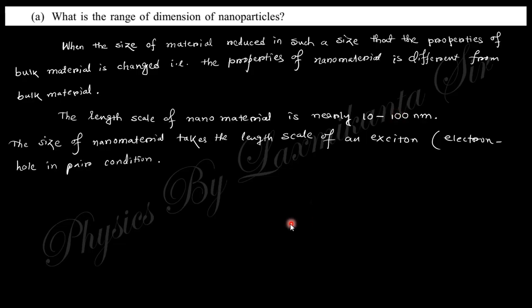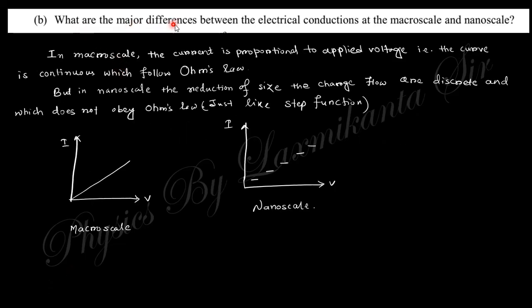Next question says: What are the major differences between electrical conduction at the macroscale and nanoscale? In the macroscale, the electrical conduction obeys Ohm's law. They are continuous curves in the V-I curve, but in case of the nanoscale, this continuous curve changes into discrete curves.